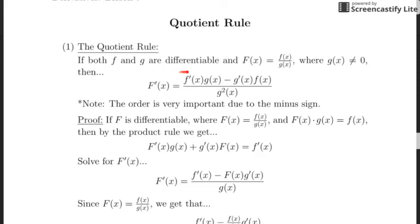This right here is the quotient rule. The derivative of that quotient is going to be the derivative of the numerator multiplied by the denominator, minus the derivative of the denominator multiplied by the numerator. That's really similar to the product rule, where we took the derivative of one function at a time — but here we subtract instead of add, so order is important.